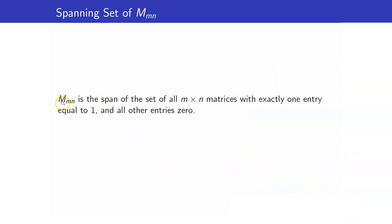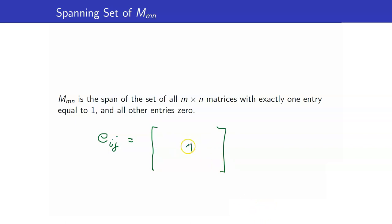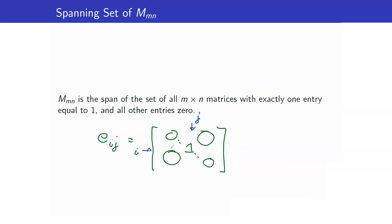In general, if we consider the set of all M-by-N matrices, we define Eij to be the matrix containing 1 in the (i,j) entry and 0 elsewhere, where this is the ith row and jth column. If we collect all of these Eij's, this set will span the entire space Mmn.